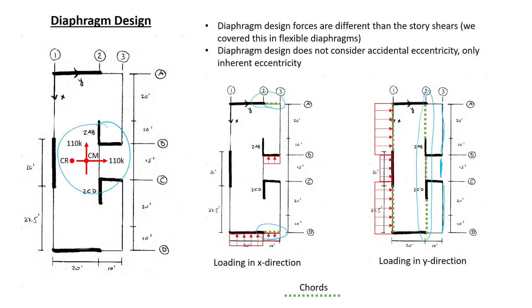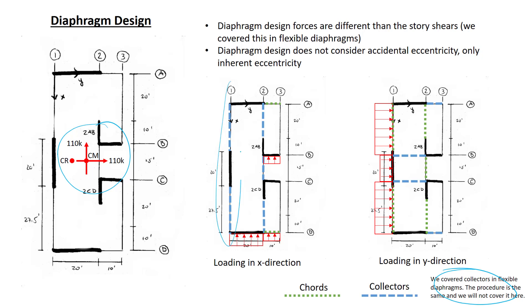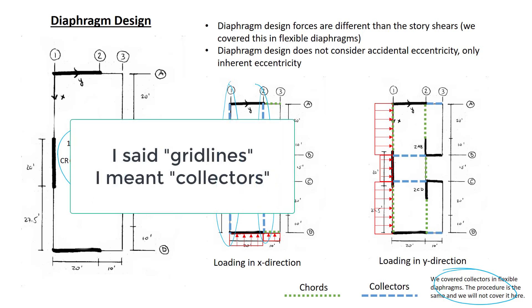Collectors are elements that are on the line of the lateral force-resisting elements perpendicular to the direction of loading, and they take the inertial force generated in the slab and deliver them to the lateral force-resisting elements. We already covered collectors in flexible diaphragms. The procedure is no different here, so I won't cover it again in this section. We can see the collectors along grid lines 1 and 2 for loading in the x direction. We can see the grid lines along lines A, B, C, and D for loading in the y direction.